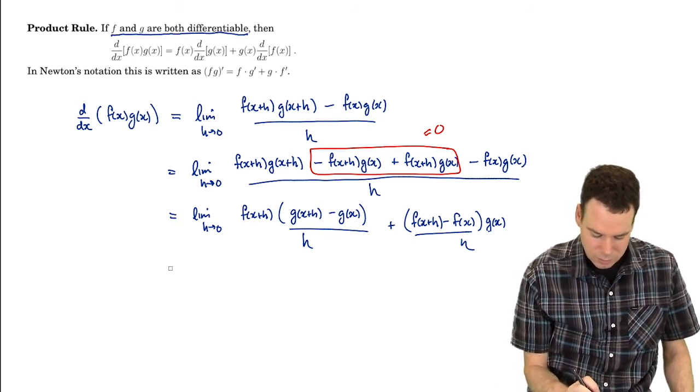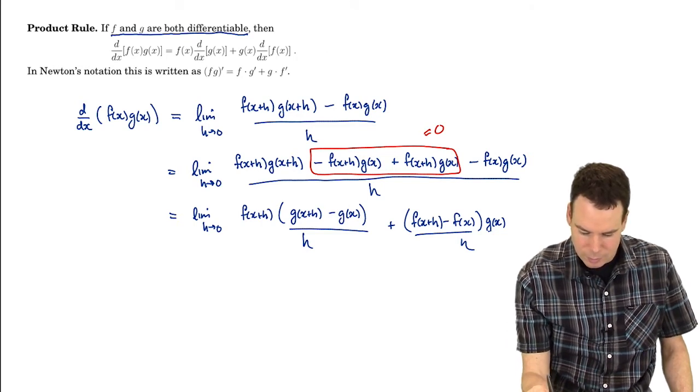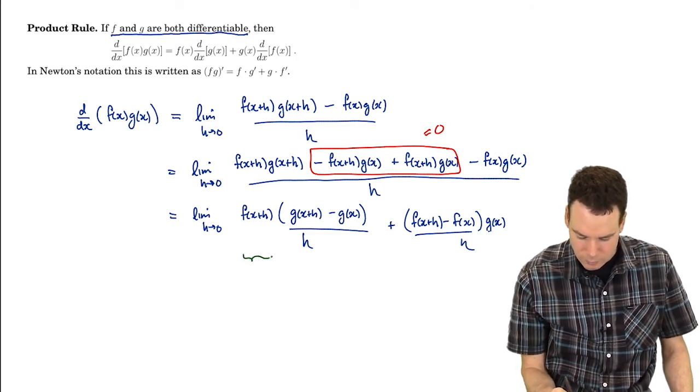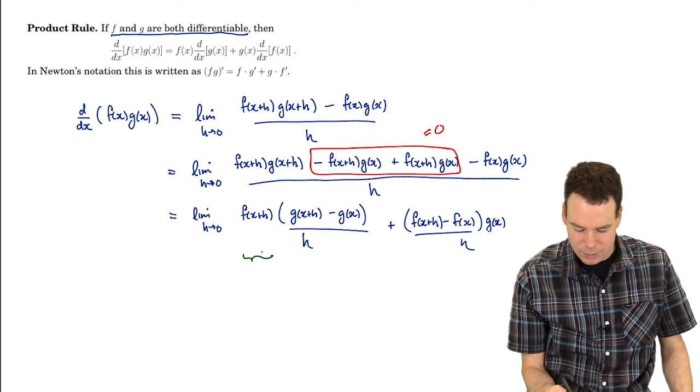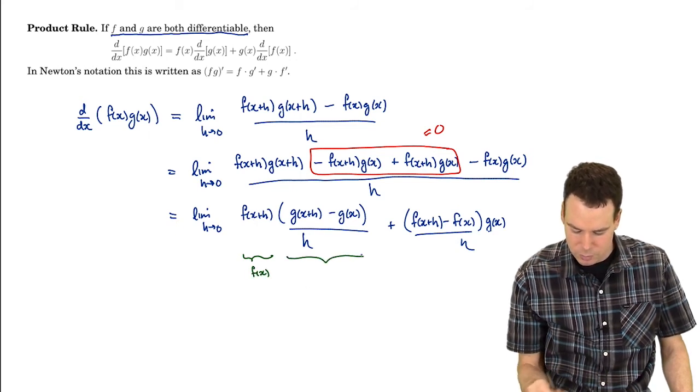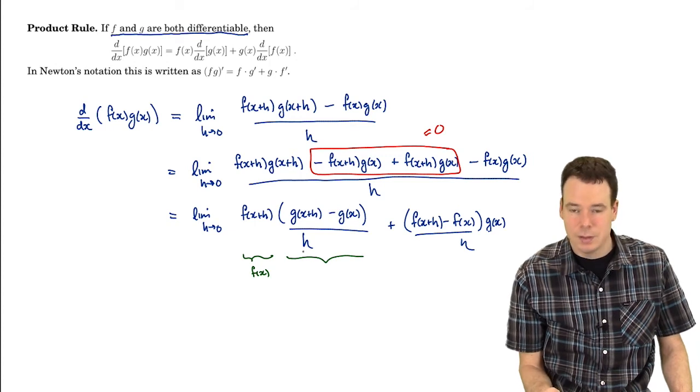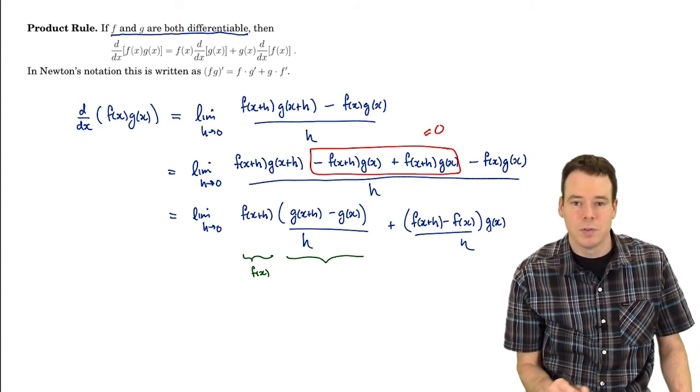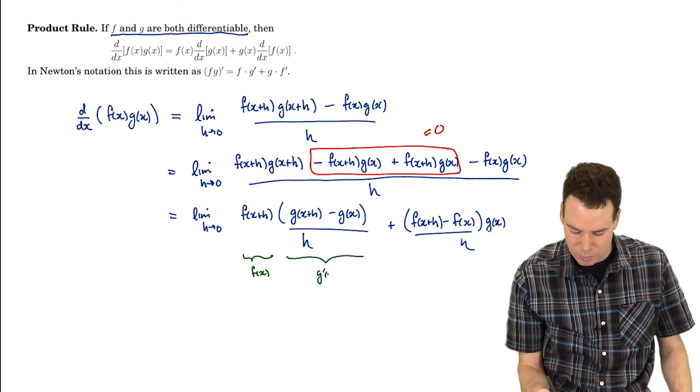What do each of these things go to? Well in this limit as h goes to zero, f(x+h) goes to f(x). What does this go to? Well as h goes to zero this is the definition of derivative for g. So this is g'(x).